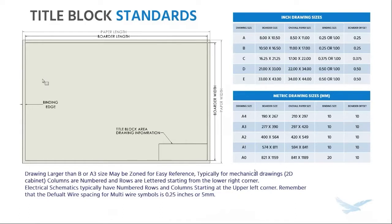Things to keep in mind: larger title blocks in the mechanical world have typically been zoned with alphanumerical characters for columns and rows. Electrical also uses columns and rows, but ours are typically numbered. When establishing rows and columns in your drawings, keep in mind the default wire spacing for symbols in electrical, which is a quarter inch or five millimeters.